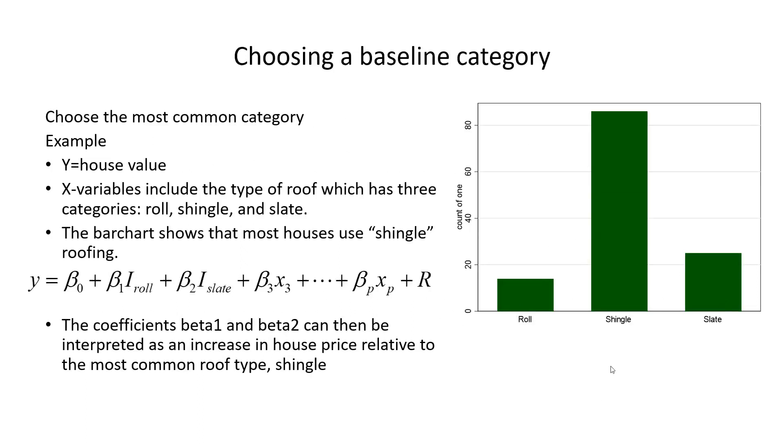The bar chart shows which one is most common. You see that by far, shingle is the most common type of roof in this data set. What you would do is leave out shingle so that you have the comparisons of roll to shingle—the left-out one—and slate to shingle.